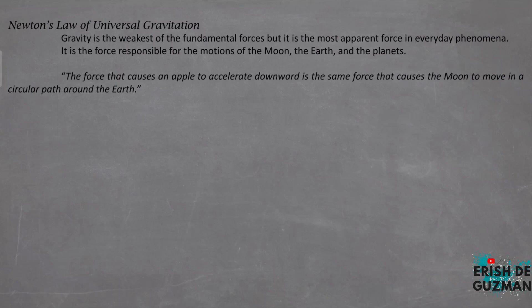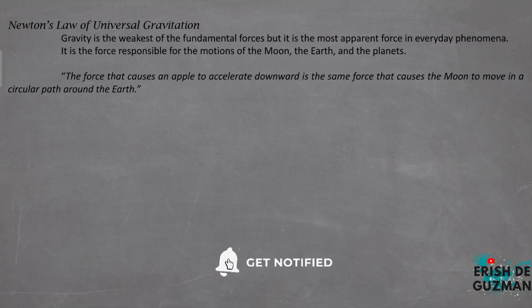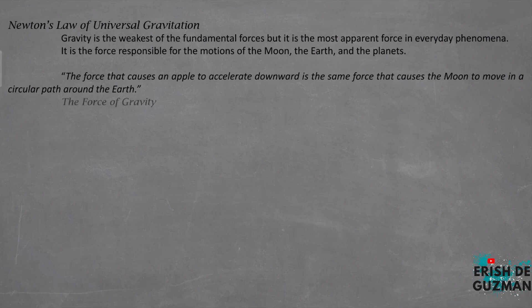Newton was also always thinking about the problem of gravity since there is acceleration in falling objects. And the same force that causes the circular motion of the Moon around the Earth, and the force that causes acceleration downwards on Earth, is the force of gravity. In 1687, Isaac Newton published his work on the law of universal gravitation.